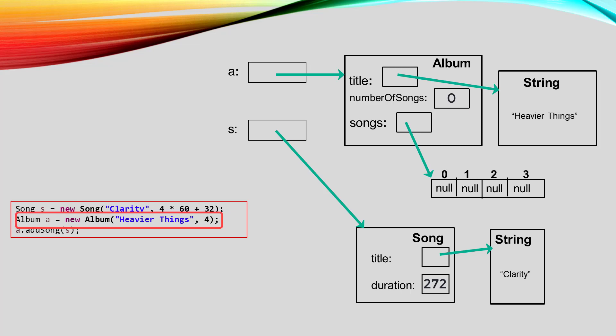Once we have created an album and a song, we use the album's addSong method to put that song into the album. AddSong just has to store the song that it is given into the first empty spot in the album's songs array and increment the number of songs that the album is holding.